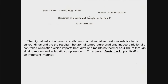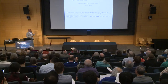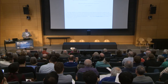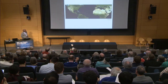In describing the details of the feedback mechanism, the argument is as follows: the high albedo of a desert contributes to a net radiative heat loss relative to its surroundings. The resultant horizontal temperature gradient induces a frictionally controlled circulation which imports heat aloft and maintains thermal equilibrium through sinking motion and adiabatic compression. And so a desert would feed back upon itself in an important manner.